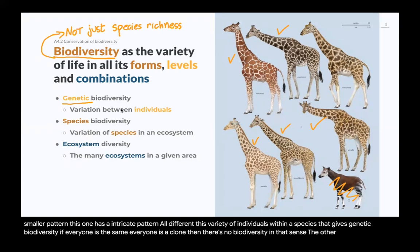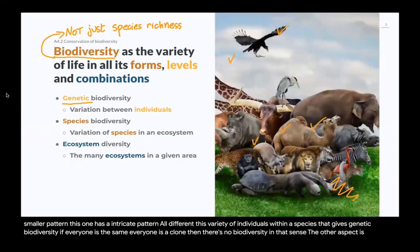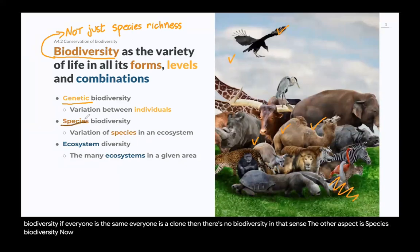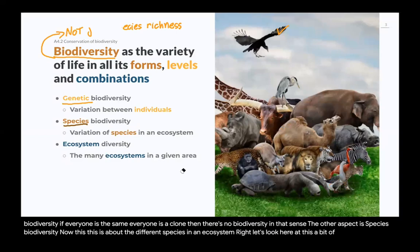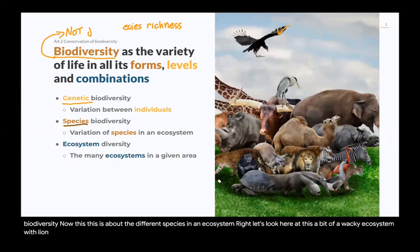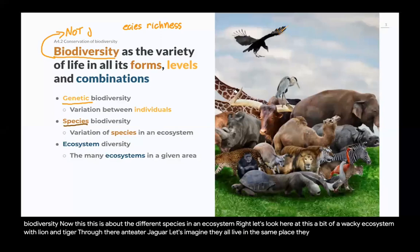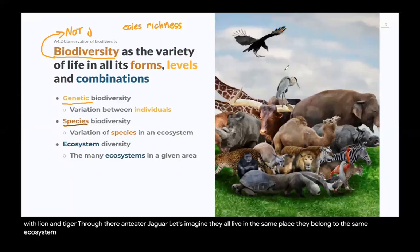The other aspect is species biodiversity. This is about the different species in an ecosystem. Let's look at this wacky ecosystem with lion, tiger, kangaroo, anteater, and jaguar. Let's imagine they all live in the same place. They belong to the same ecosystem. Then you would have here the different species composing the species biodiversity of that ecosystem.